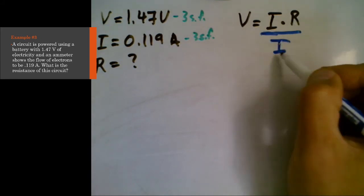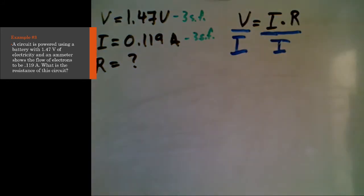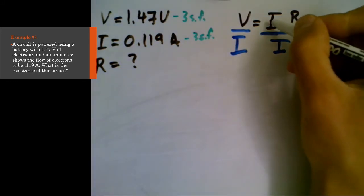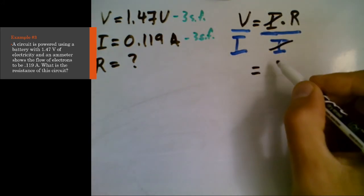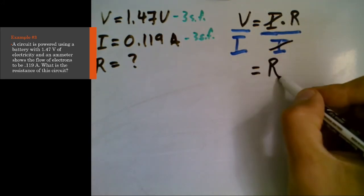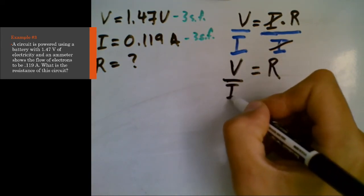So divide by I. And to keep it equal, if you do it on one side, do it on the other. I divided by I, well, that's one. And anything multiplied by one is itself. So that's going to cancel. What I have left is R is equal to V divided by I.